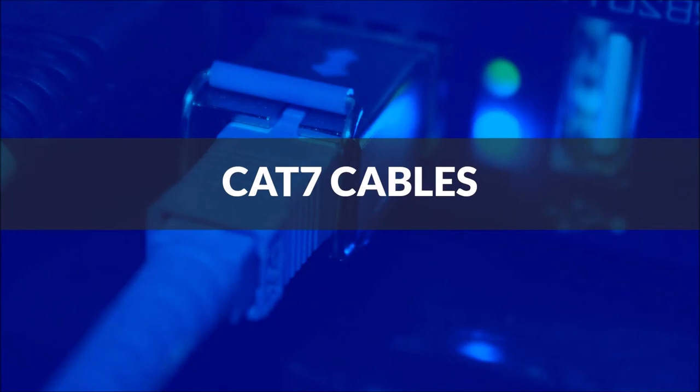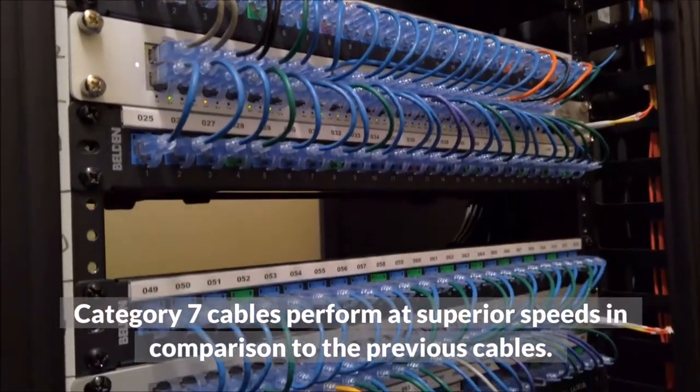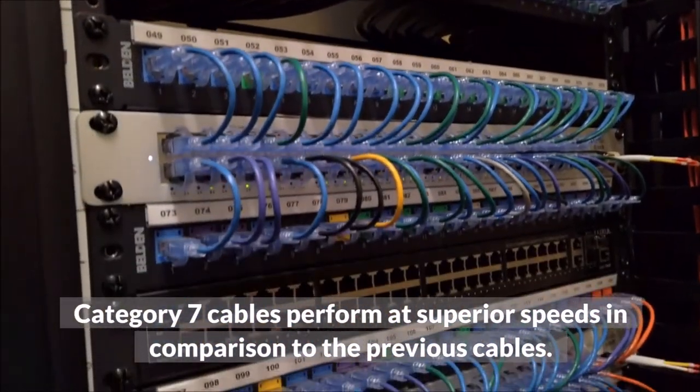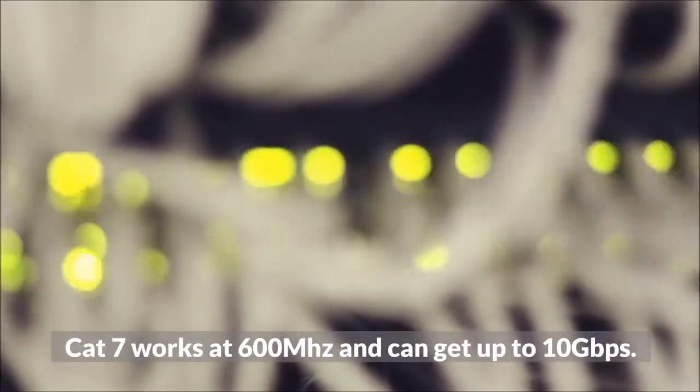CAT-7 cables. Category 7 cables perform at superior speeds in comparison to the previous cables. CAT-7 works at 600 MHz and can get up to 10 Gbps.